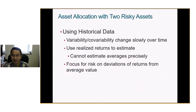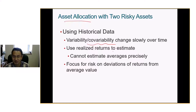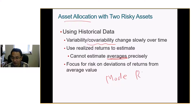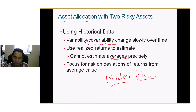You can always use historical data to do asset allocation, but you need to understand that covariances will change, and realized returns might not equal the historical average. This is called model risk. We have a good model, but all models are wrong — some are helpful. So you need to be careful.